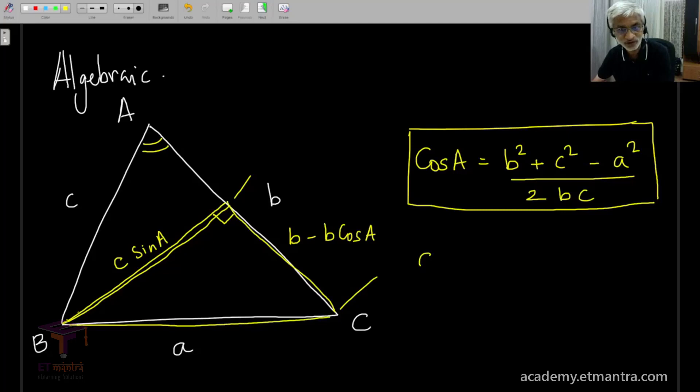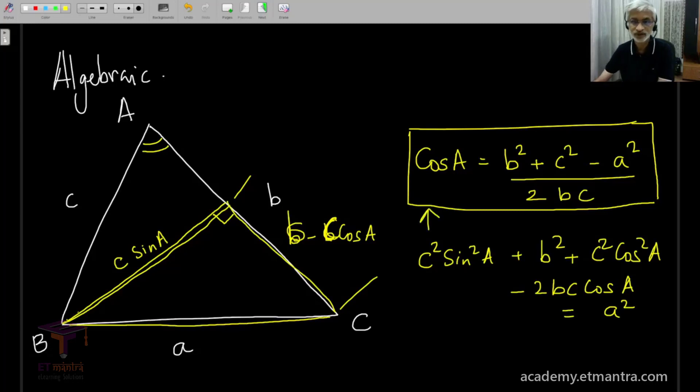So this would mean C² sin² A plus, I'm sorry, this is B minus C, C sorry, C cos A. So plus B² + C² cos² A - 2BC cos A, and this is equal to A², and we immediately get the formula that we have written on top.